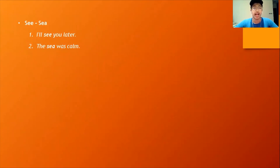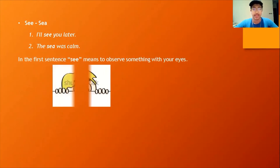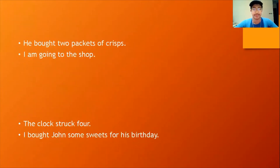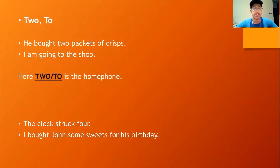Let's take another example. 'I'll see you later.' 'The sea was calm.' So in the first sentence, 'see' means to observe something with your eyes, and in the second sentence, 'sea' refers to the water body. I'm pretty sure you're familiar with homophones. Homophones are words that sound the same but have different spellings and different meanings. For example, 'He bought two packets of crisps.' 'I'm going to the shop.' So 'two' and 'to' both sound the same but have different meanings and different spellings — they are homophones. Can you identify the homophone in the second example? Exactly — 'for' and 'four' both sound the same but have different meanings and are spelled differently.